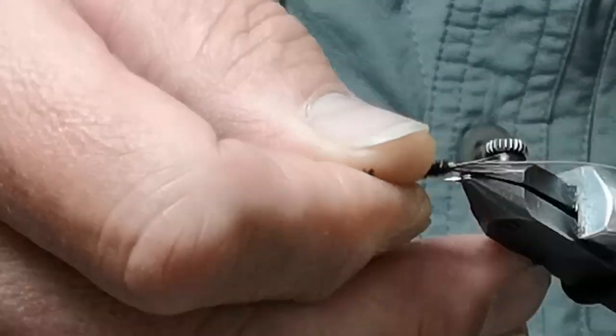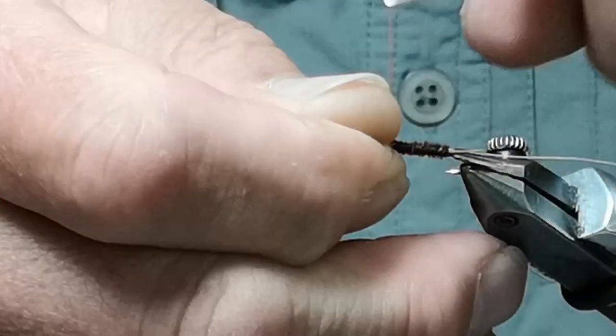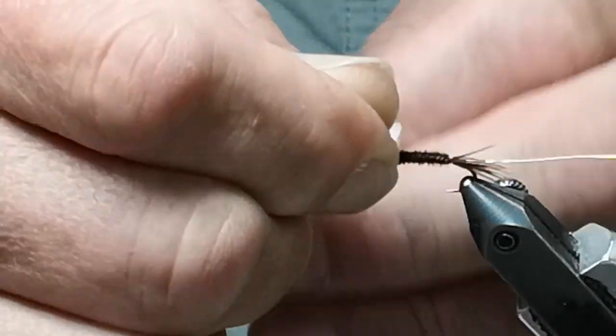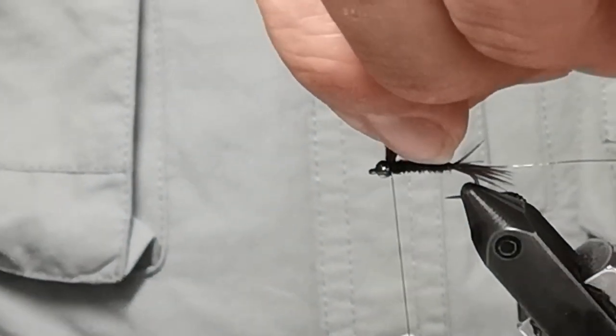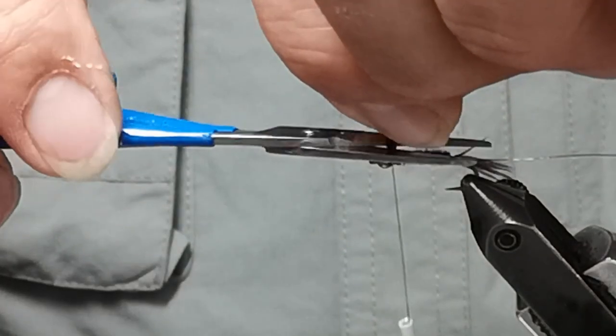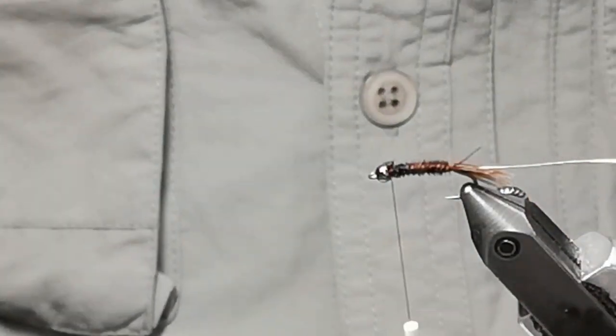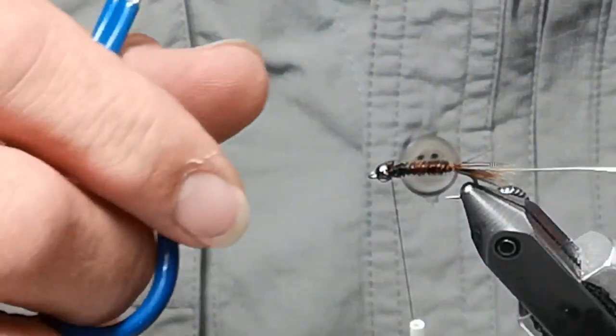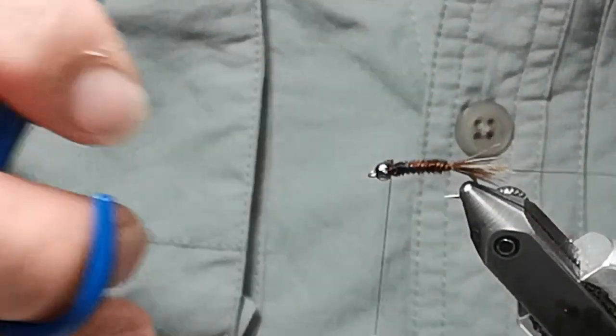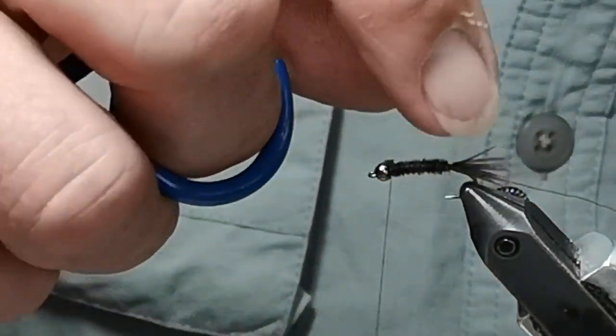As we all evolve into fly fishers, we wonder why these things work and what goes on. I'm using a gold wire for the rib. I've tied on the tail quite bushy there, probably used eight or ten fibers of pheasant tail.